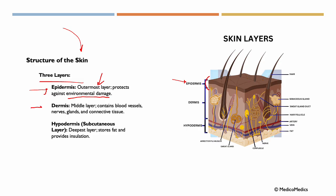We then have the dermis, which is the middle layer, containing our blood vessels, nerves, glands, and connective tissue. Illustrated here. We have the hypodermis, or the subcutaneous layer. It is the deepest layer, which stores fat and provides insulation. Seen here.